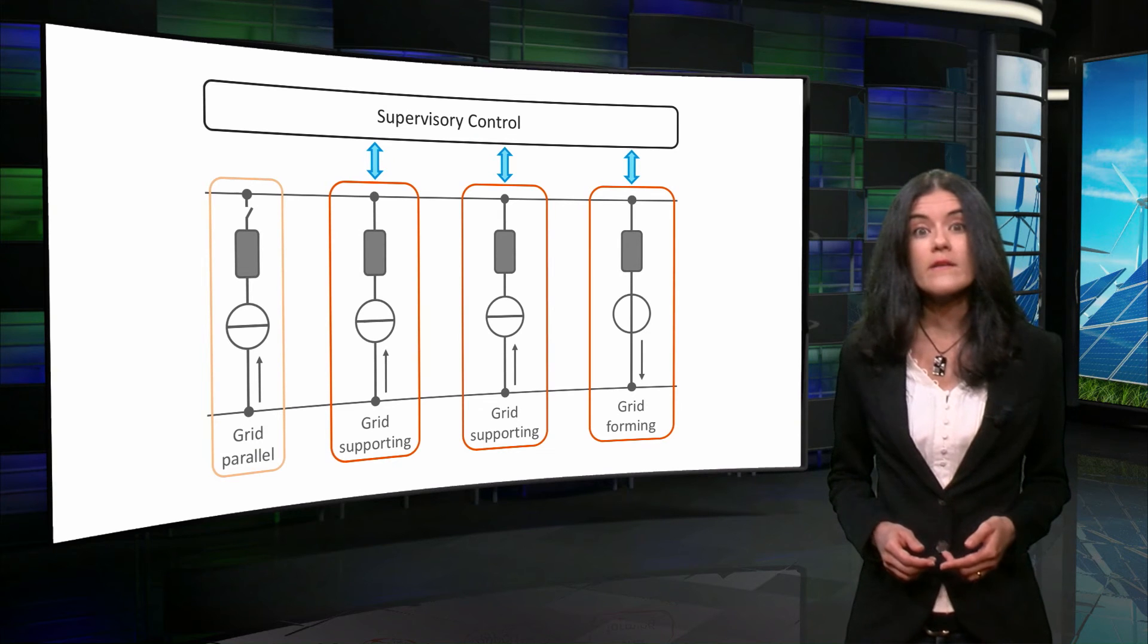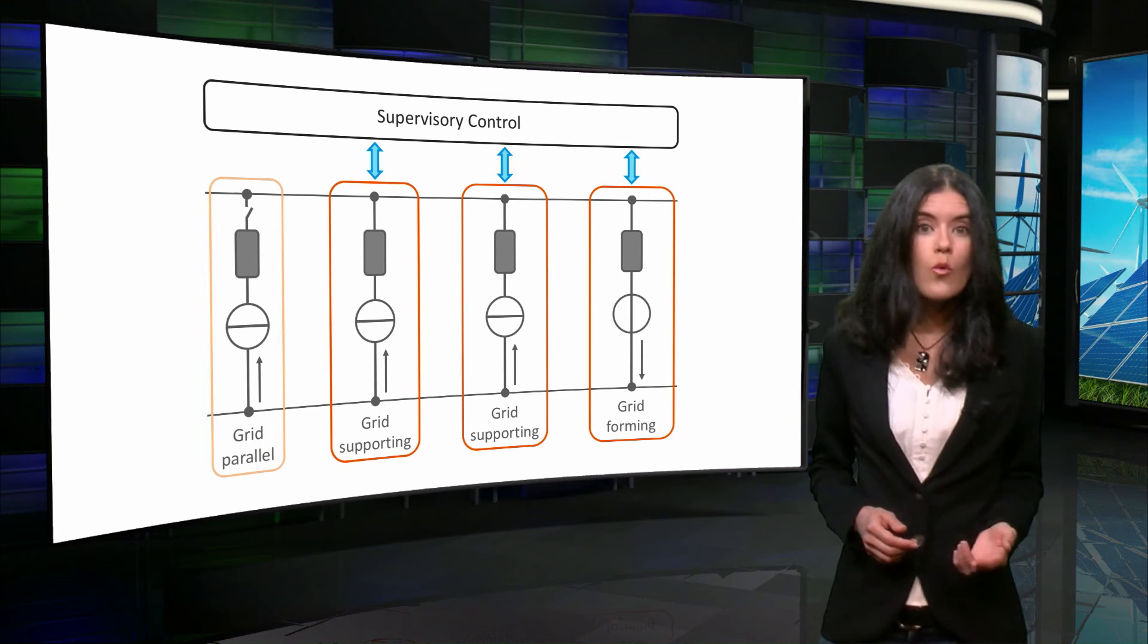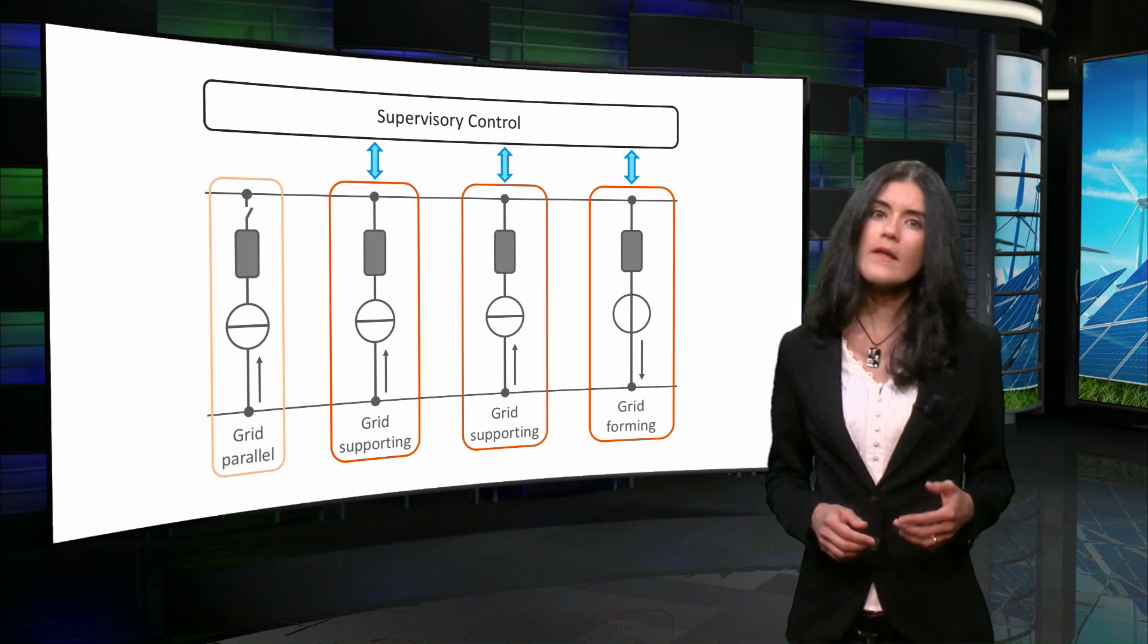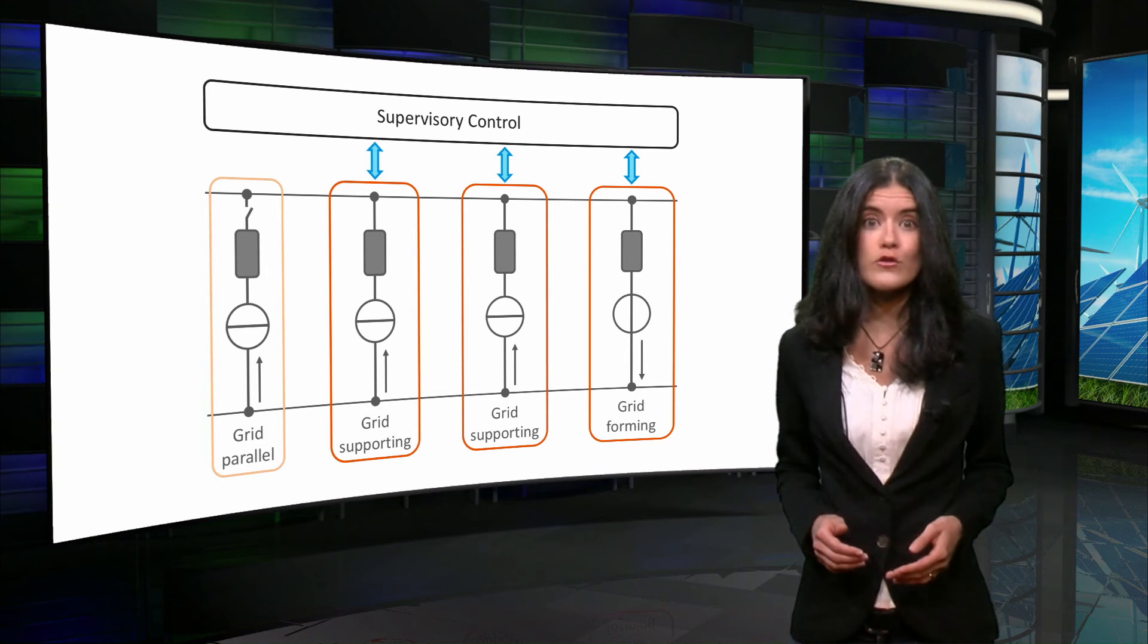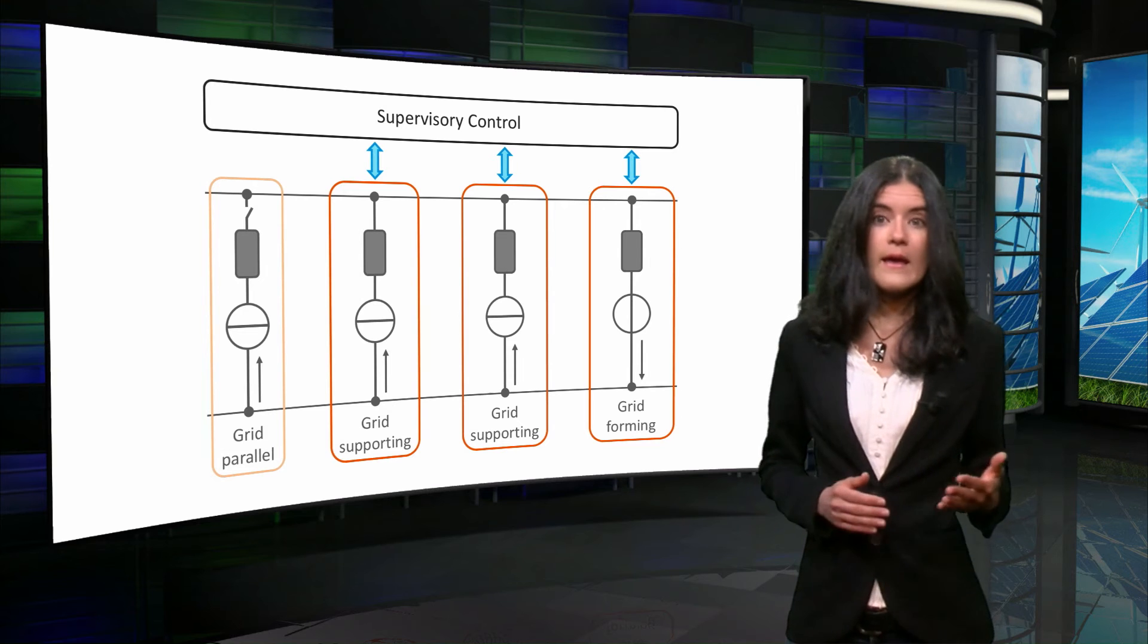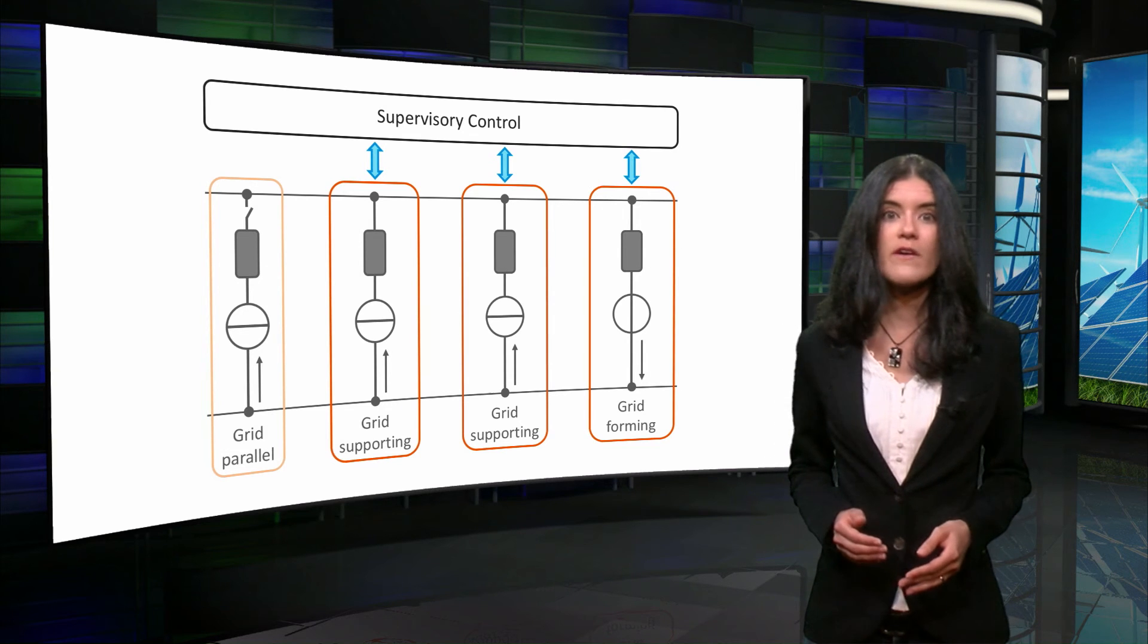When the microgrid operates in autonomous or off-grid mode, the voltage and frequency should be determined by the power converters in the system. In the case of a centralized supervisory control,